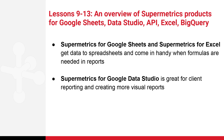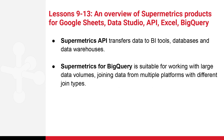Supermetrics for Google Sheets and Supermetrics for Excel help you get data to spreadsheets and come in handy when formulas are needed in reports. Supermetrics for Google Data Studio is great for client reporting and creating more visual reports. Supermetrics API helps you get data to BI tools, databases, and data warehouses, and Supermetrics for BigQuery is suitable for working with large data volumes, joining data from multiple platforms with different join types in Google BigQuery.